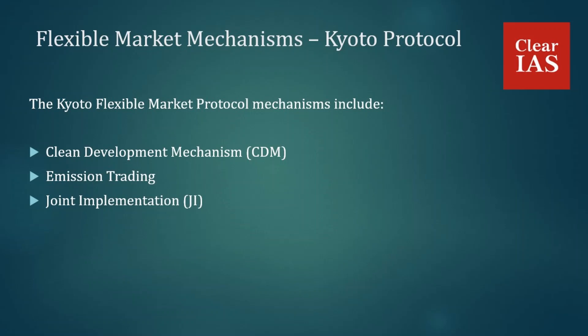Joint Implementation allows a country with an emission reduction commitment under the Kyoto Protocol to earn Emission Reduction Units (ERUs) from an emission reduction project in another Annex B party, each equivalent to one ton of CO2, which can be counted towards meeting its Kyoto target. In summary, the three flexible market mechanisms are: the Clean Development Mechanism, Emission Trading, and Joint Implementation.